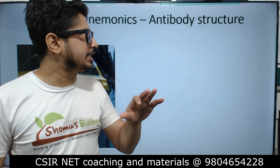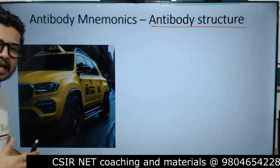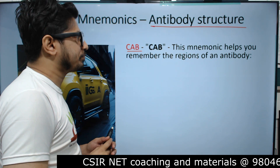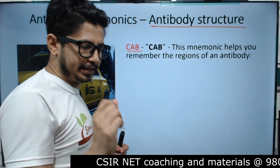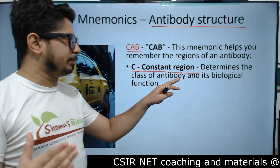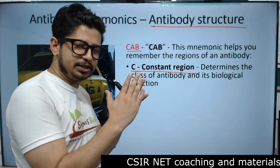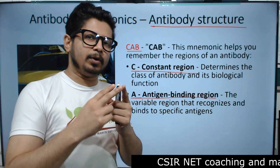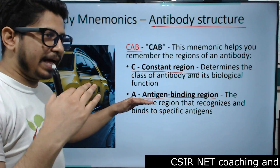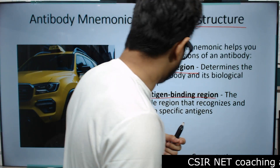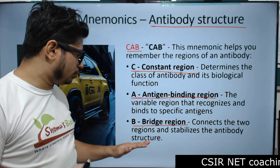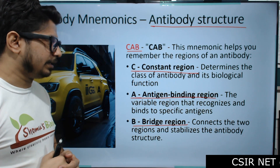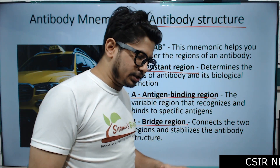The last thing is about antibody structure — how to remember the components. I want you to see this image of a CAB. CAB is the mnemonic for the regions of an antibody. C is the Constant region — it determines the class of antibody and its biological function; it is fixed and non-variable. A is the Antigen binding region — the Y-shaped arms of the antibody — this is the variable region that recognizes and binds to specific antigens in a lock-and-key fit. B is the Bridge region — it connects the two regions and stabilizes the antibody structure.